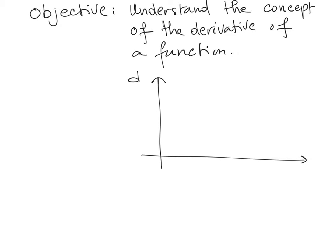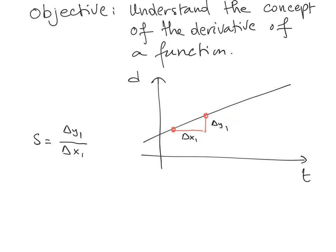Consider function D with variable T. The function is linear. Let's take the first two points and define what we call the slope S, defined as Delta y1 over Delta x1. If we consider any other two points on the line — Delta x2, Delta y2 — the two slopes are equal because the two right triangles are similar, and therefore the ratio Delta y over Delta x is the same everywhere.